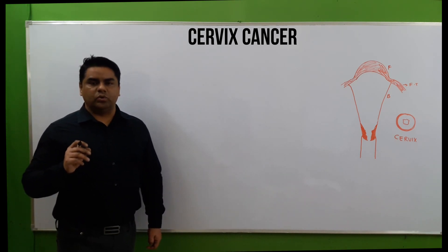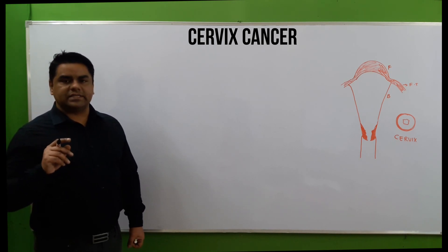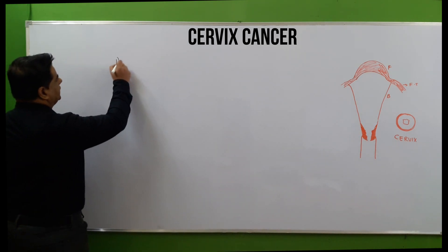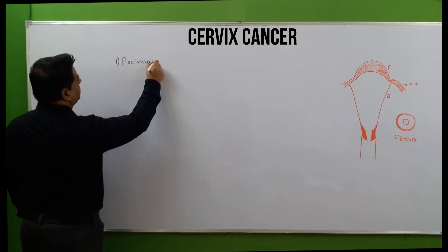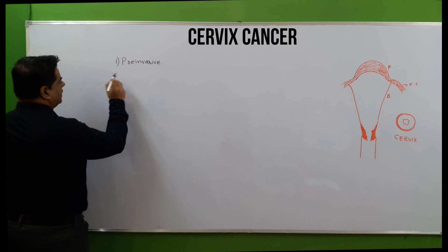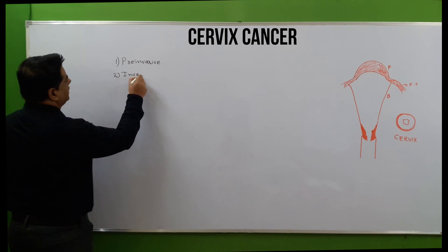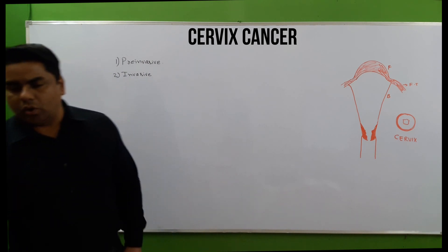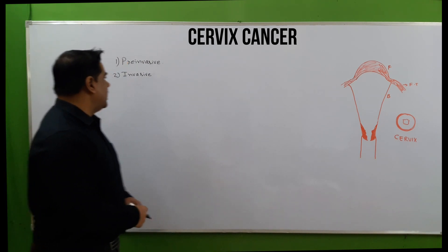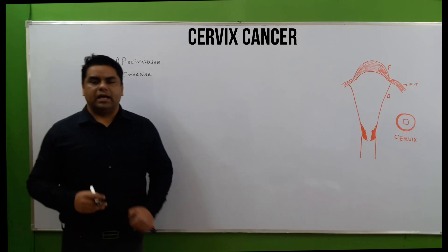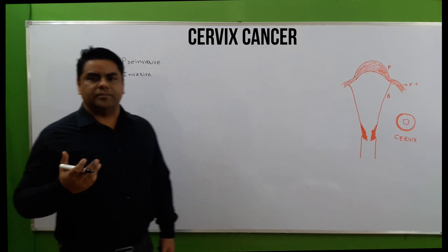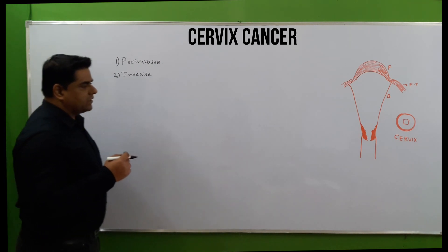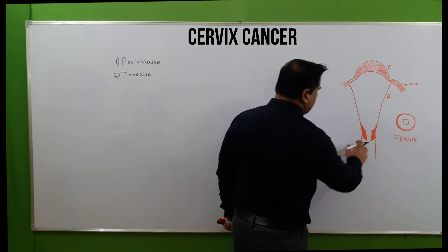Cervical cancer is generally of two types. First is pre-invasive cancer, which is limited to the cervix area only. Second is invasive cancer, which can affect the pelvic organs and pelvic bones, and can spread via the lymphatic system to different body parts and associated structures. The carcinoma in situ or benign nature remains confined to the cervix itself.